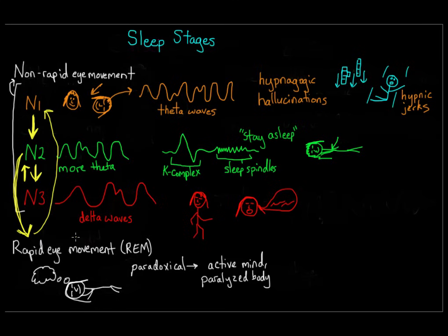How long each stage lasts depends partially on how old you are and how long you've been asleep. You tend to do a lot more slow wave sleep (N3) in the first few hours, and more REM sleep right before you wake up. So if you want to remember your dreams, you can set your alarm 15 minutes earlier than usual to get jerked out of REM sleep and be more likely to remember what you dreamed.